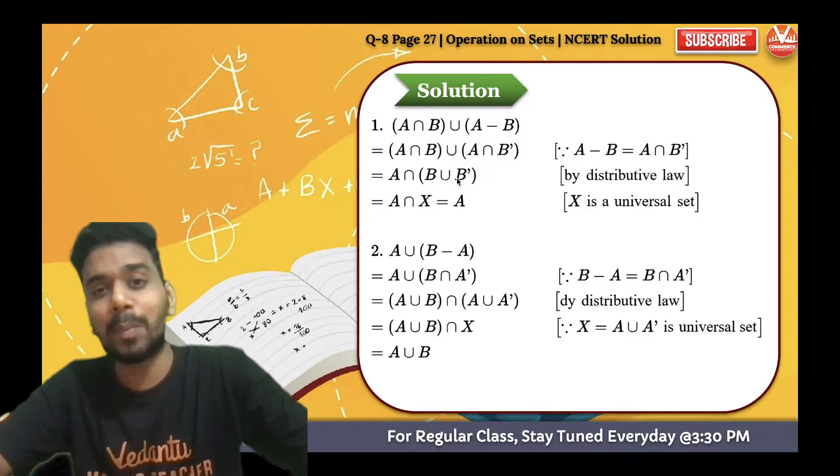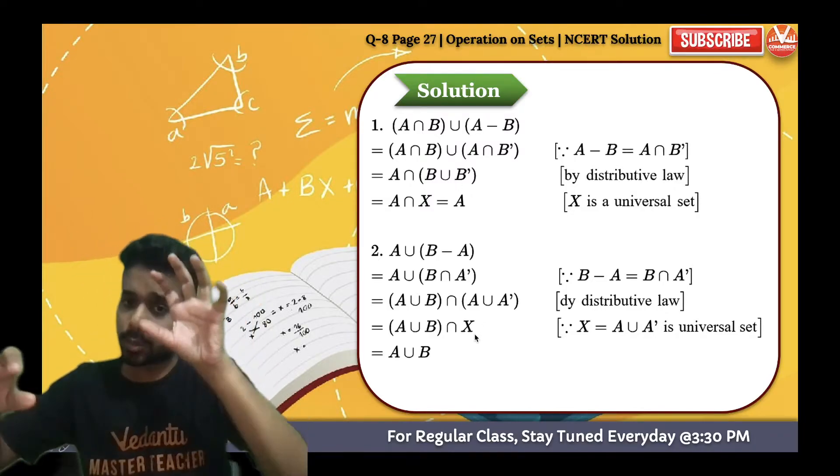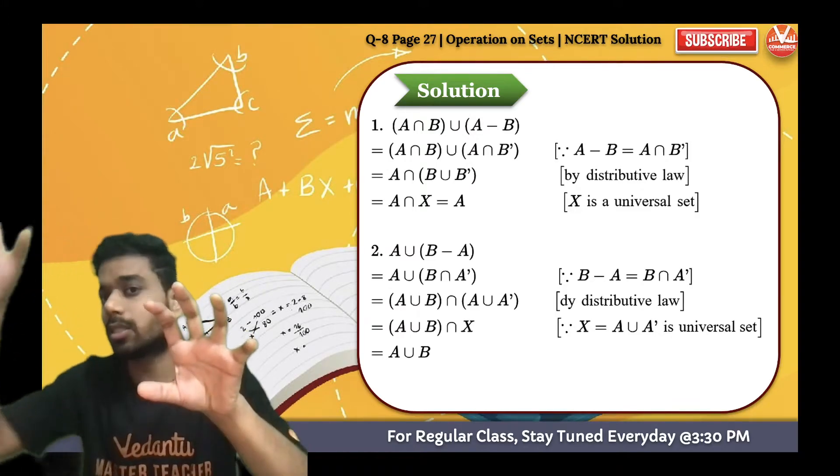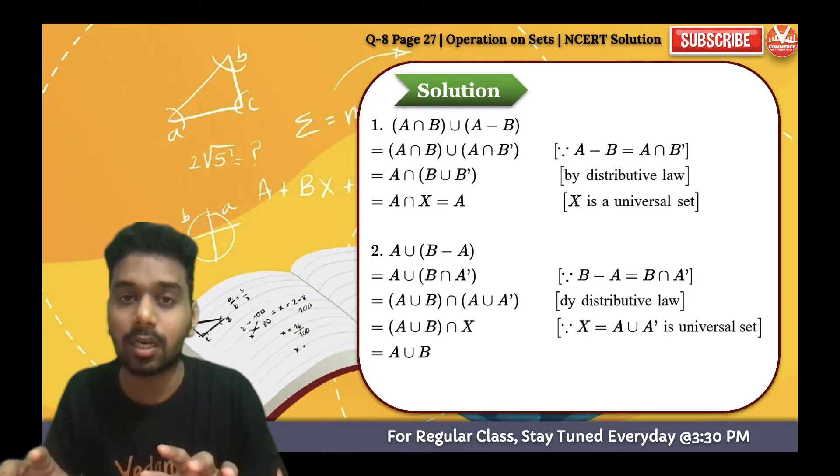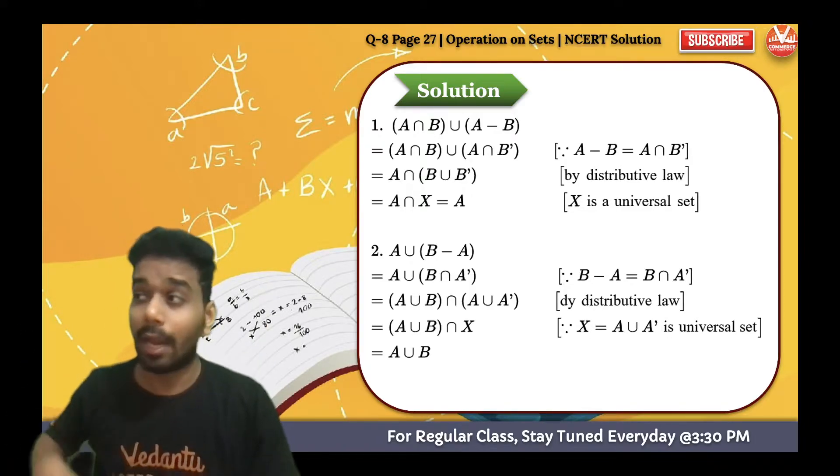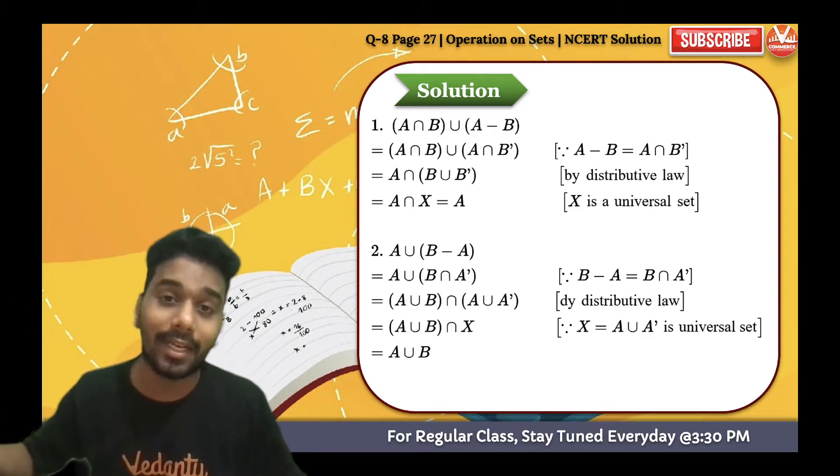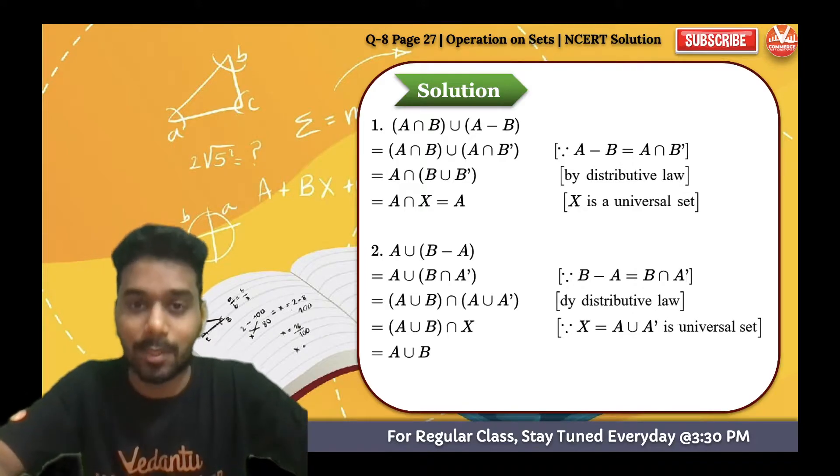B union B dash - in both the cases it's a universal set. Basically, this small circle and other than this small circle in the box will make a complete circle. It's more like what I have in my pocket and what I do not have in my pocket is the complete universe. Same thing happens over here.